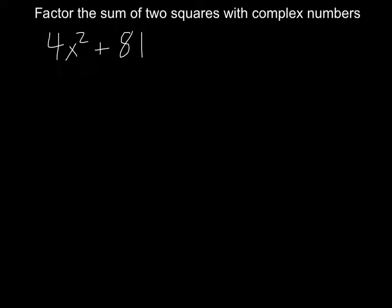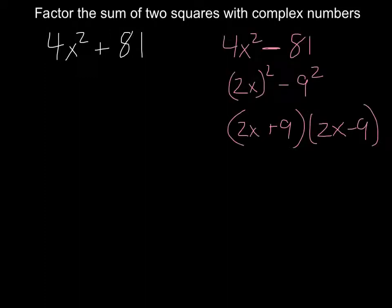You may recall that I could factor the difference of two squares as follows. Using the difference of squares formula, I note that 4x² is the quantity 2x squared minus 9 squared.